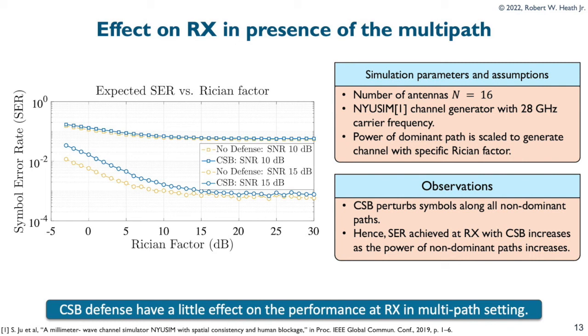And finally, we now also discuss limitation of our method. More generally, this is a limitation of all the directional modulation-based defenses. The DM-based methods perturb constellation in all directions, but one target direction. In the multipath setting, this means that the receiver receives multiple perturbed constellations from non-dominant paths and one unperturbed constellation from the dominant path. And all of these constellations combine together at the receiver. This affects the symbol recovery at the receiver. To show that, we use the Rayleigh channel model to analyze the effect of multipath. We first use NYU sim to generate the channels and scale the dominant path to get a channel with a specific Rayleigh factor. We see that as the power of non-dominant path increases, which is going towards the negative x-axis, the gap between the symbol error rate at the receiver with and without CSB defense increases.